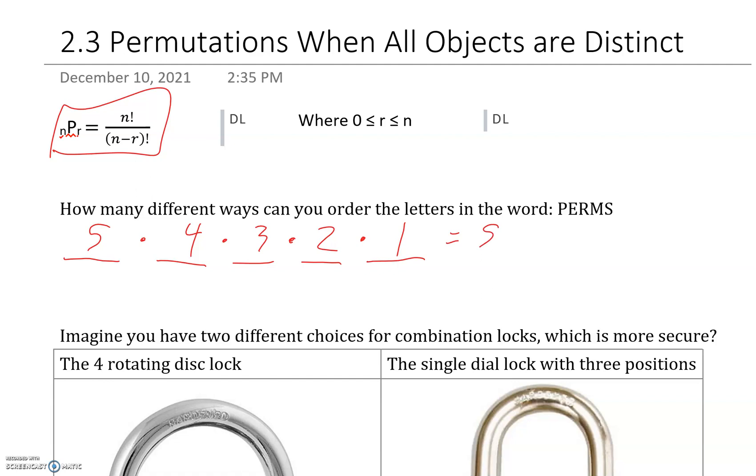And we get... Another way to write that would be 5 factorial. So 5 factorial, let's just plug this in my calculator, is 120.